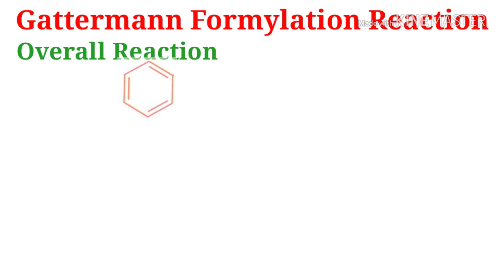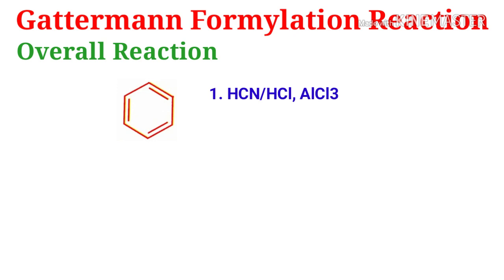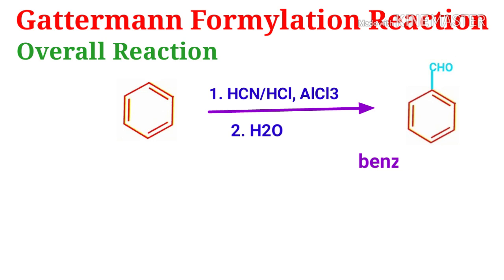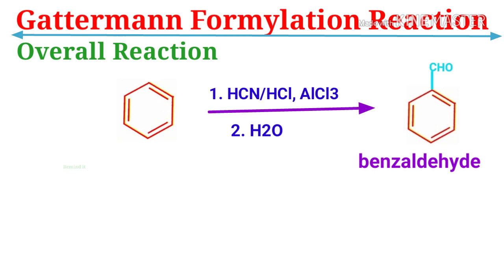The overall reaction is: when an aromatic compound — here it is benzene — is treated with hydrogen cyanide and hydrogen chloride in the presence of Lewis acid AlCl3, followed by water, it produces an aromatic aldehyde — here it is benzaldehyde. This is the overview of the Gutterman-Formylation reaction.